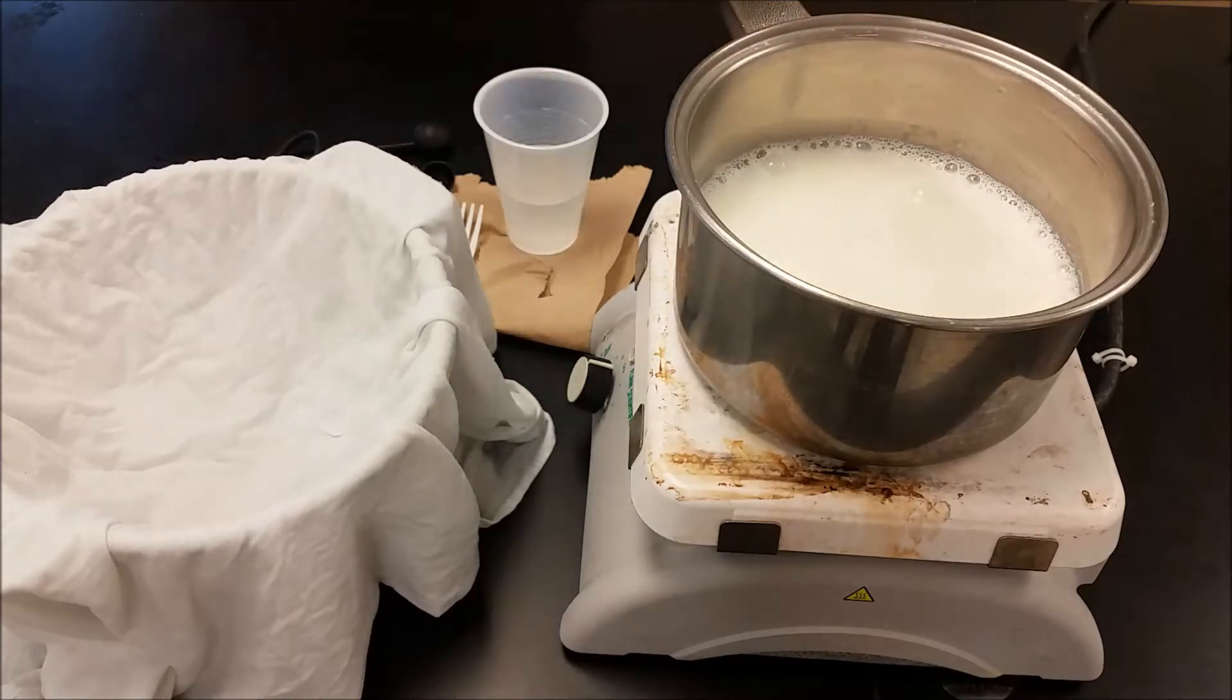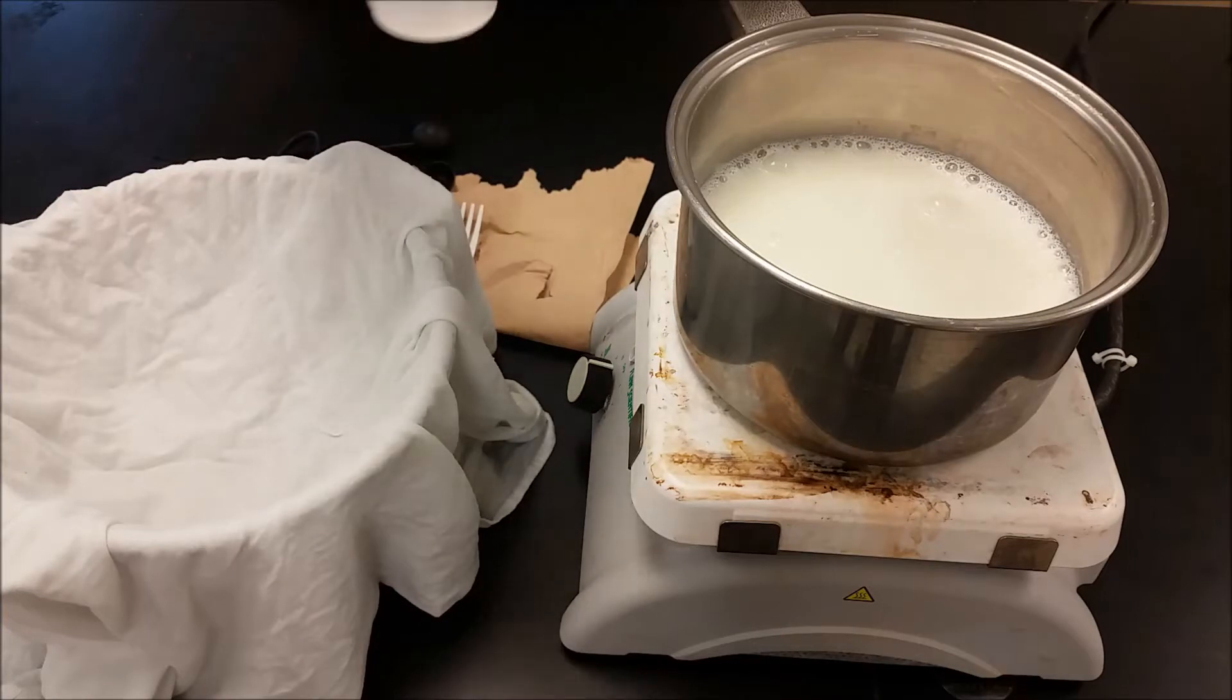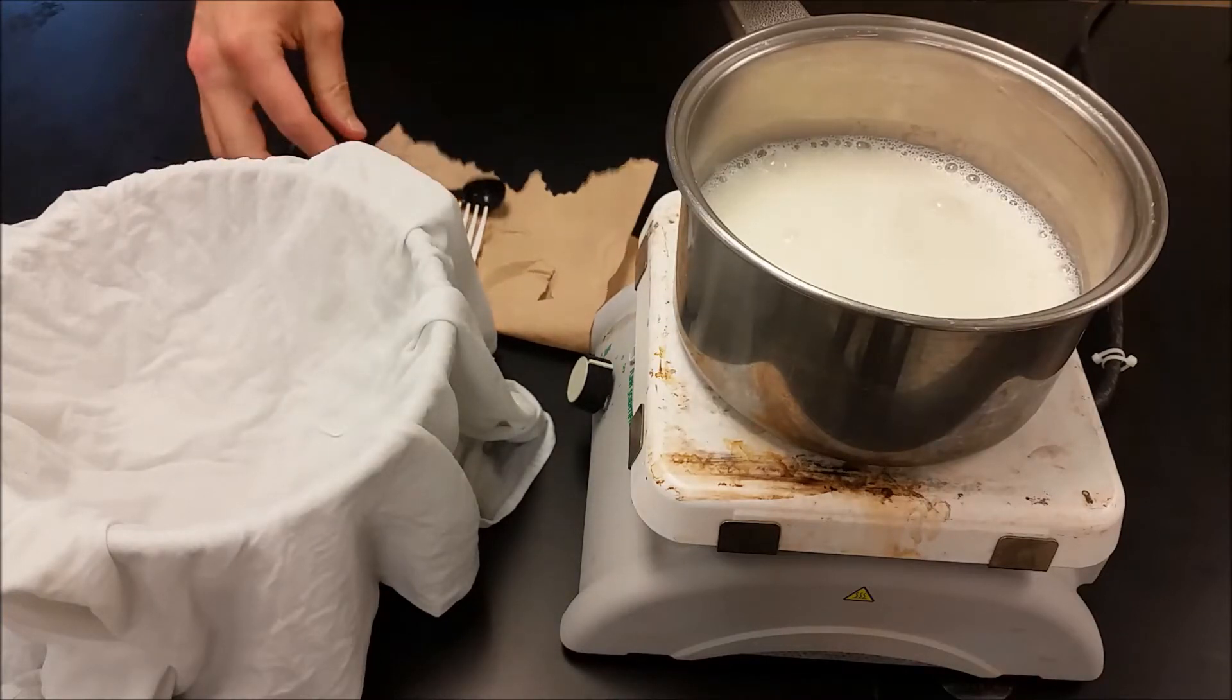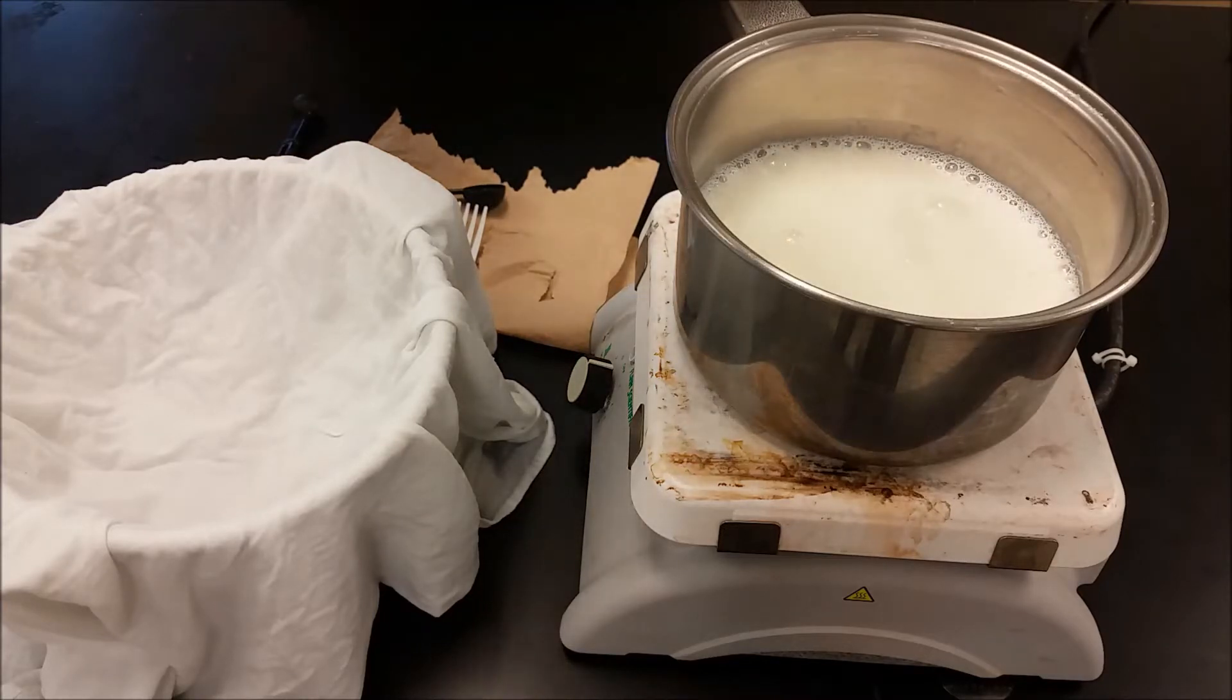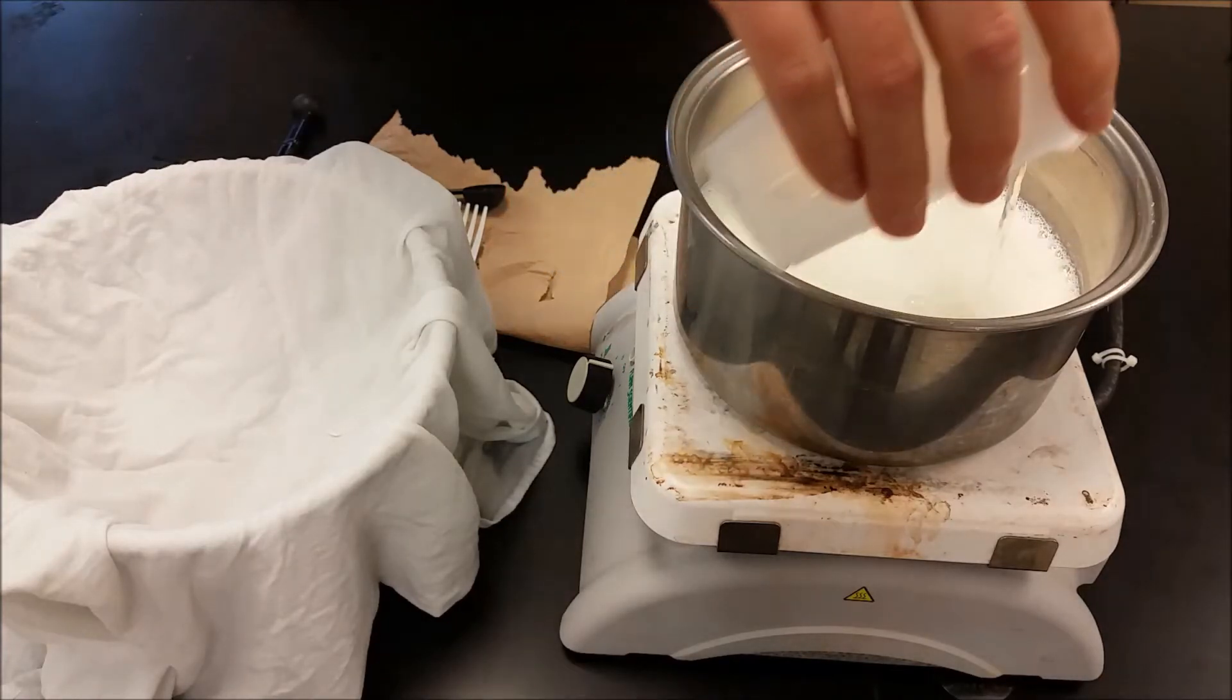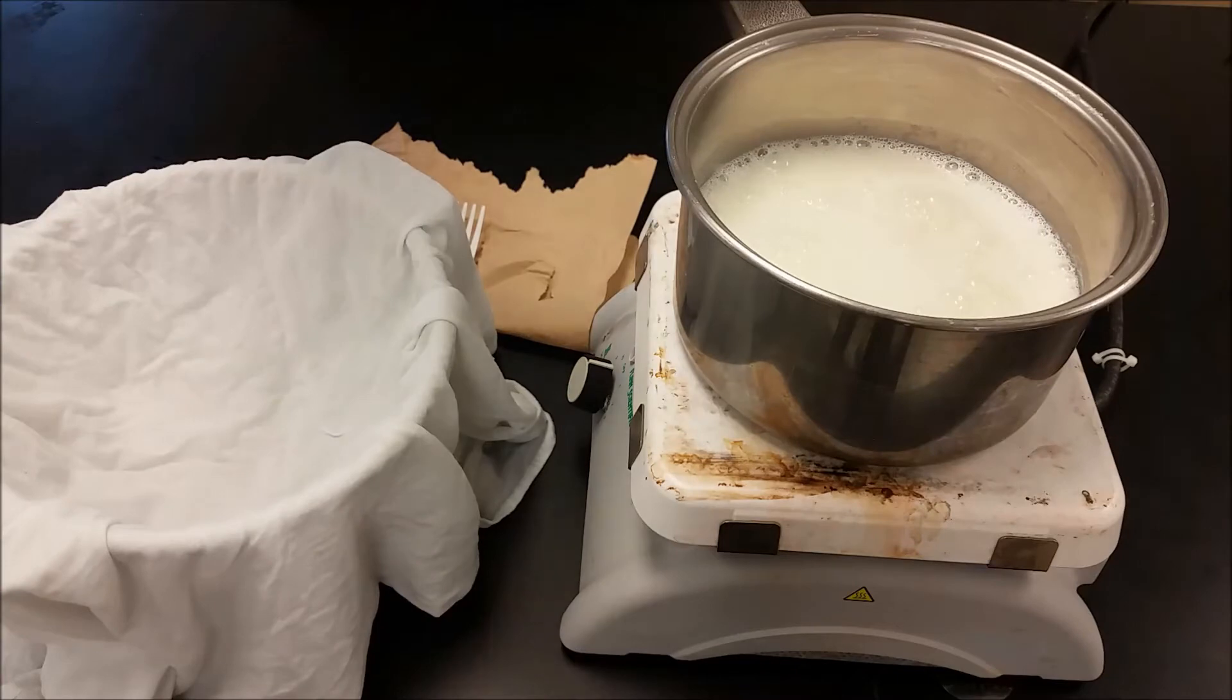Give that one last stir, and once it's gotten to that point you're just going to add some citric acid. I have a teaspoon of citric acid in about a half cup of water, and I'm going to mix the two. When I do that, the acid is going to affect the casein in the milk and cause it to curdle.